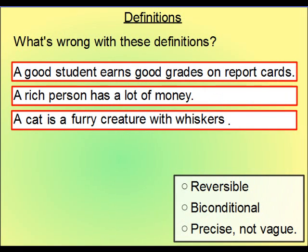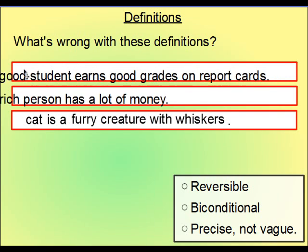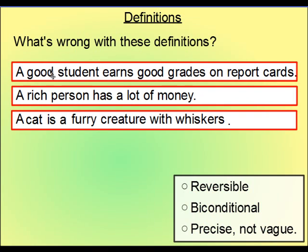So, let's look at some bad definitions. Exactly what's wrong with them? Well, this first one here, what's not good is the word good. Let's try again. What's not good is the word good. The word good here is vague. It's not very precise. Remember, that's one of the conditions that we have to meet.